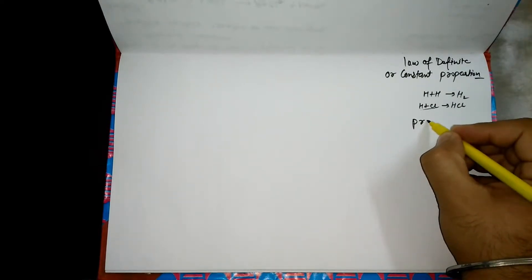When we talk about the law of definite proportion or constant composition, this law of constant combination was initiated by the French scientist or chemist Joseph Proust.